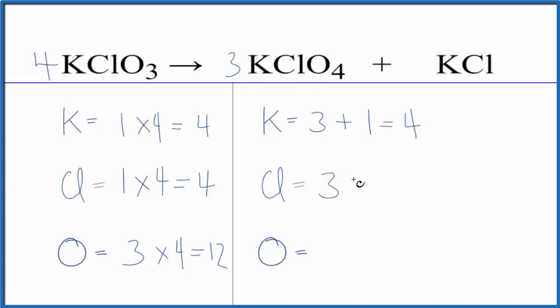One times three, that gives me three, plus the other chlorine here. Chlorines are balanced. Four times three, that gives me twelve. Well, oxygens are balanced. So this equation is now balanced.